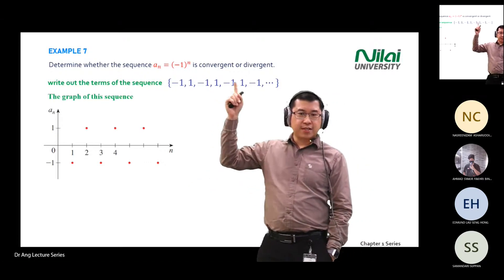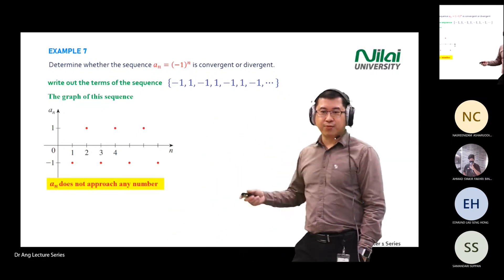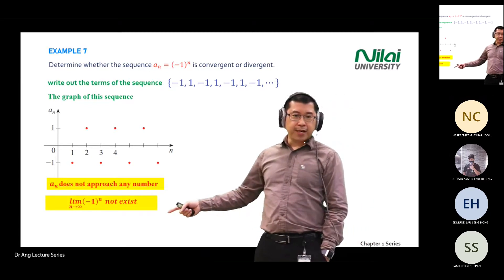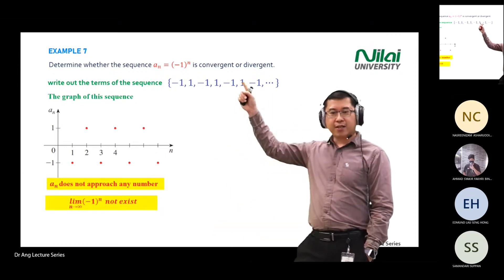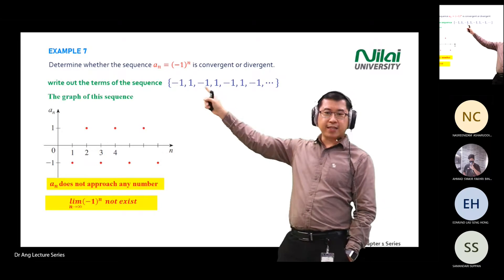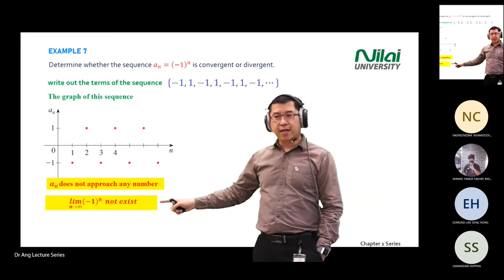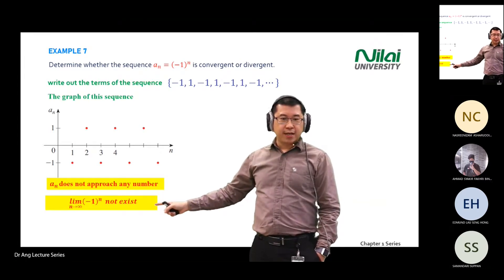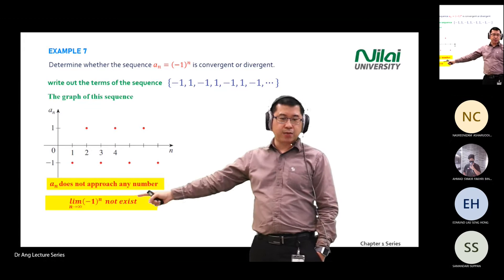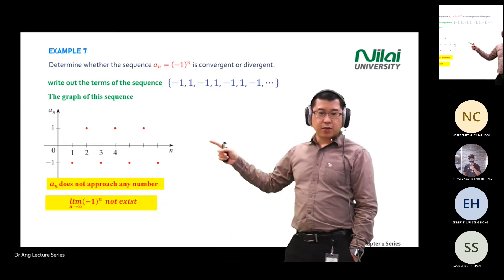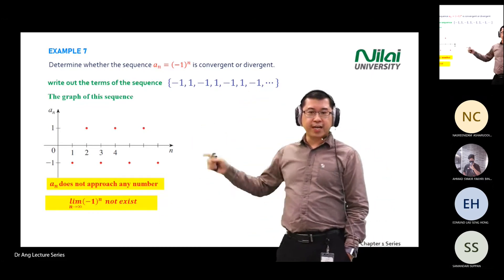Looking at this data, it is divergent — because you cannot get one fixed number; it fluctuates between one and minus one. So the answer is divergent, and the limit does not exist. In an exam, if your answer is divergent, you state that the limit of a_n as n approaches infinity does not exist.